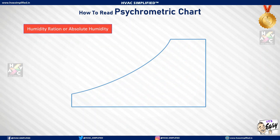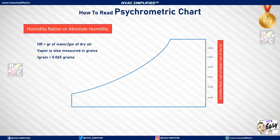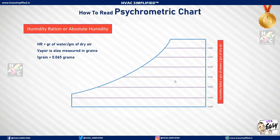The next parameter is humidity ratio, also known as absolute humidity. It is measured in grains of water per gram of dry air. Vapor content is also measured in grains, where one grain is equal to 0.065 grams. On the psychrometric chart, the humidity ratio is shown on the right-hand side and is read using horizontal lines.